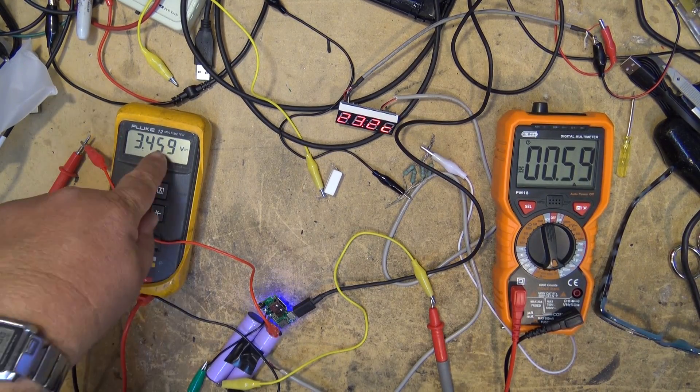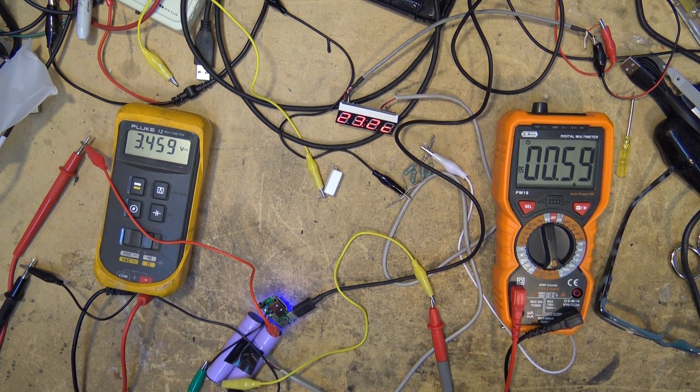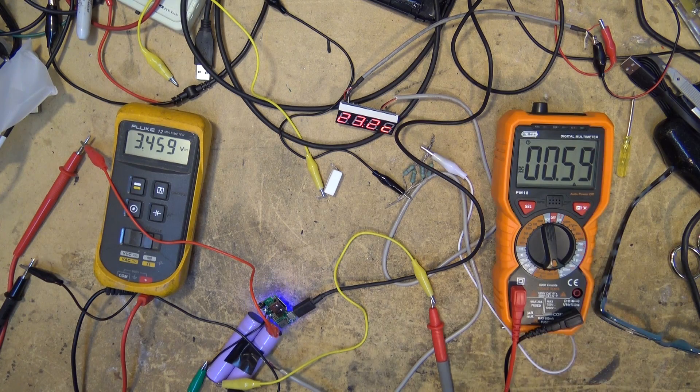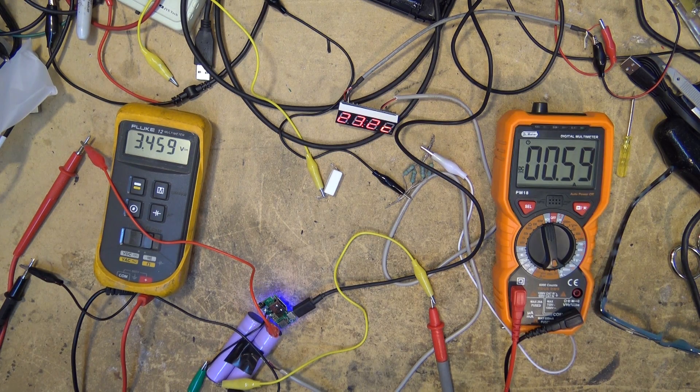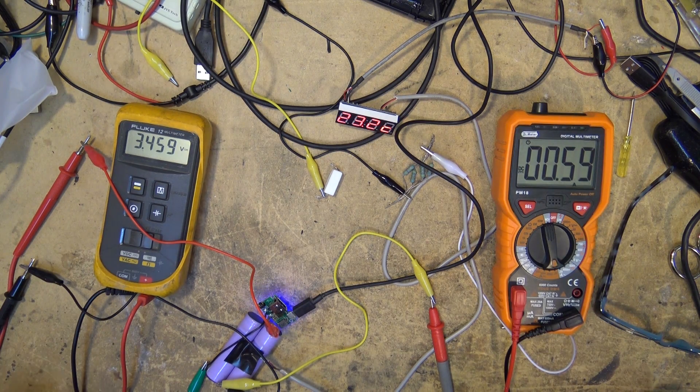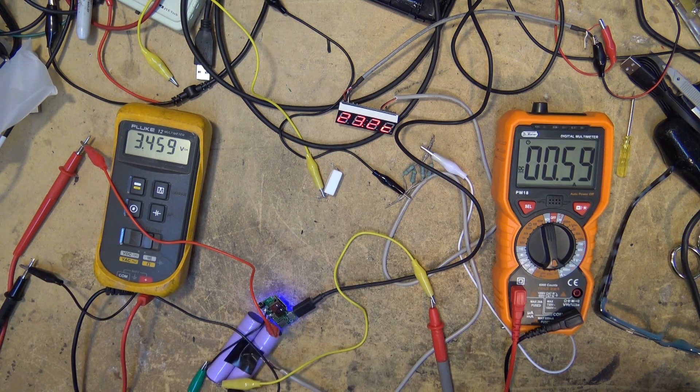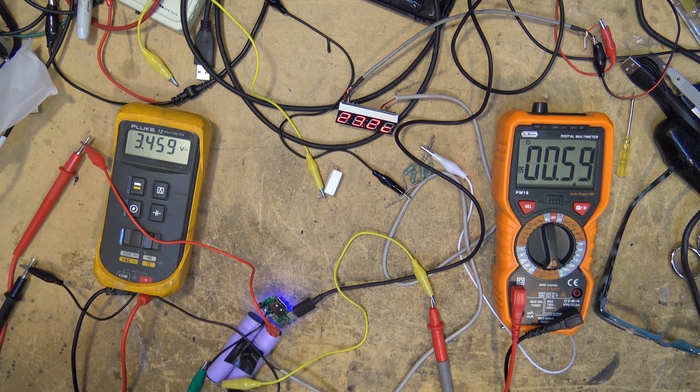About one hour into the charge, our charging voltage is now 3.459 and our charge current has dropped down to 0.59, so 590 milliamps. Our cell temperature has dropped to 23.2 degrees Celsius.